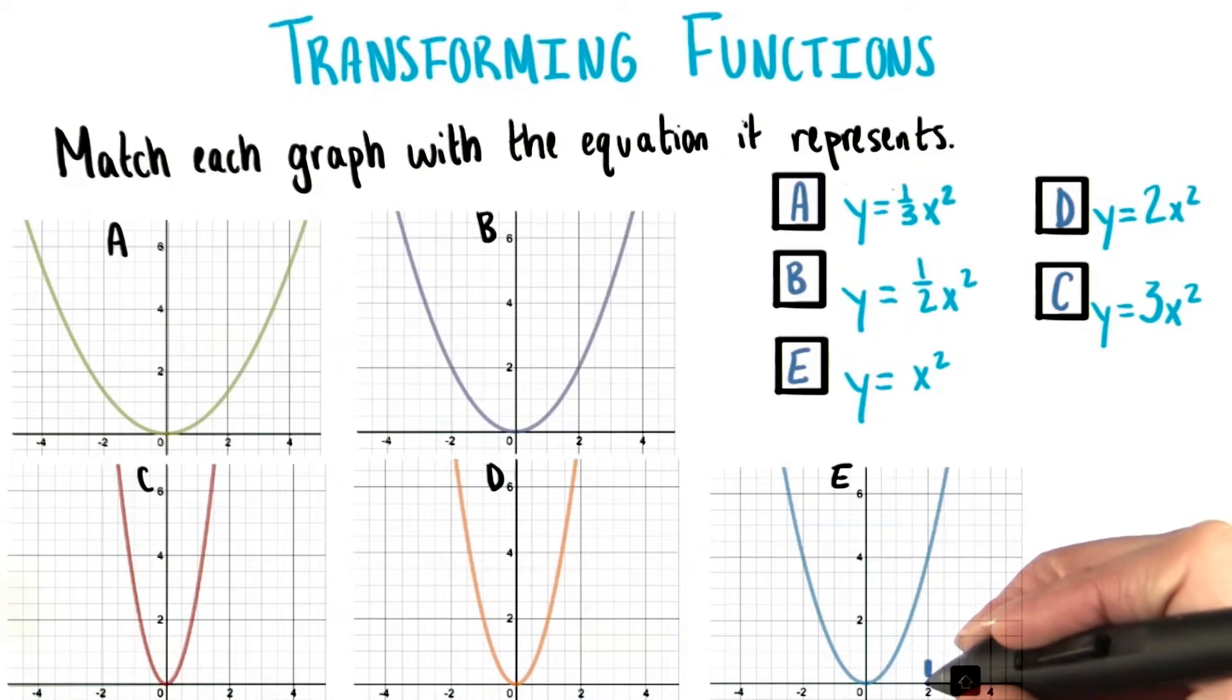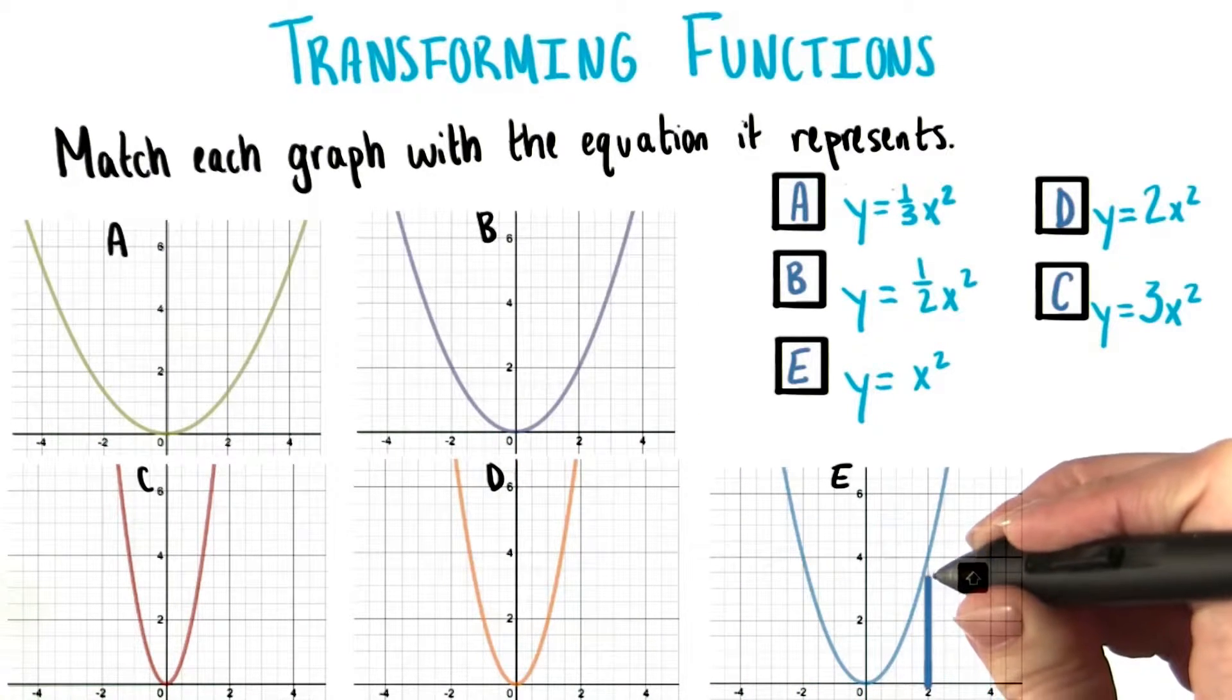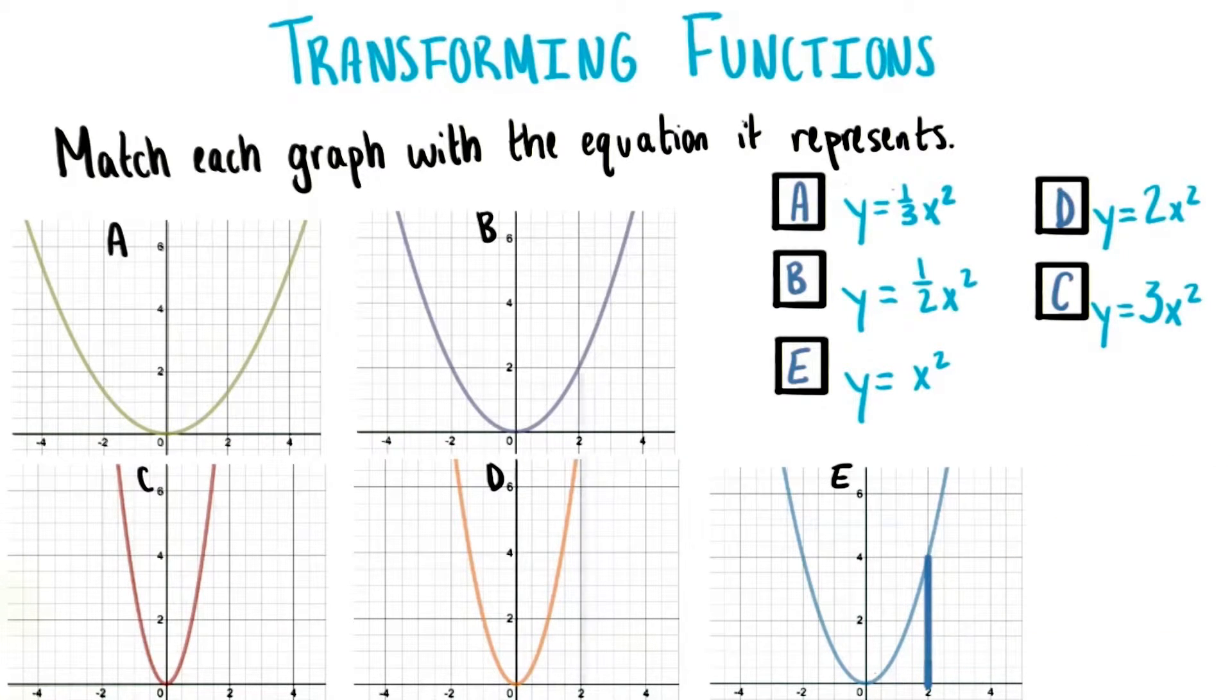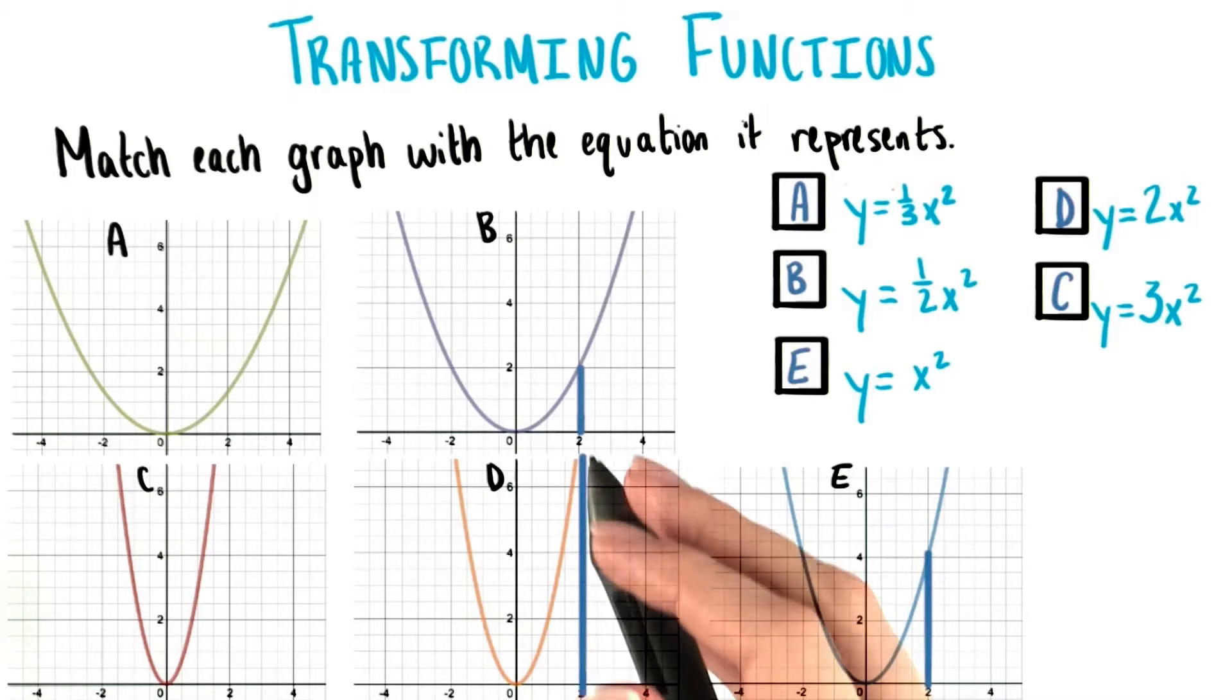You can imagine that if I drew a vertical line going from the x-axis all the way up to where the line meets the graph, we can compare how tall graphs are to one another by picking the same x value and then seeing how tall that line is, how many units in the y direction it takes to hit our graph.